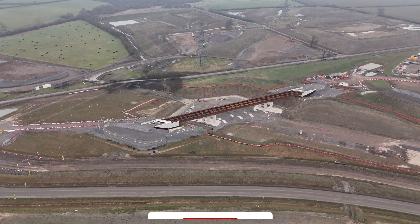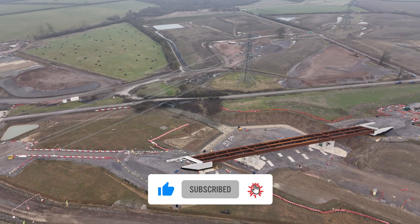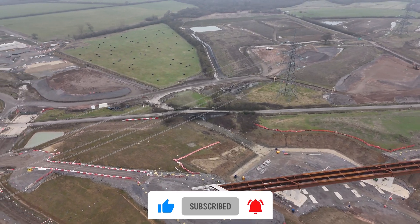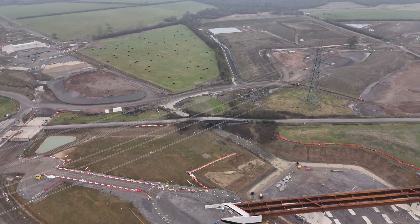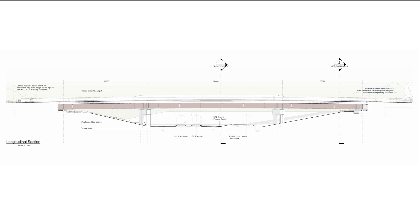Because the old road is going, this also means the loss of the former Great Central Railway Bridge, which we can see here just near the new overbridge. The core of the bridge is constructed out of weathered steel girders, then the reinforced concrete deck slab is placed on top, followed by the concrete parapets, and then the grass verges and carriageway. The bridge is particularly wide to accommodate the network rail link between Calvert and Aylesbury.